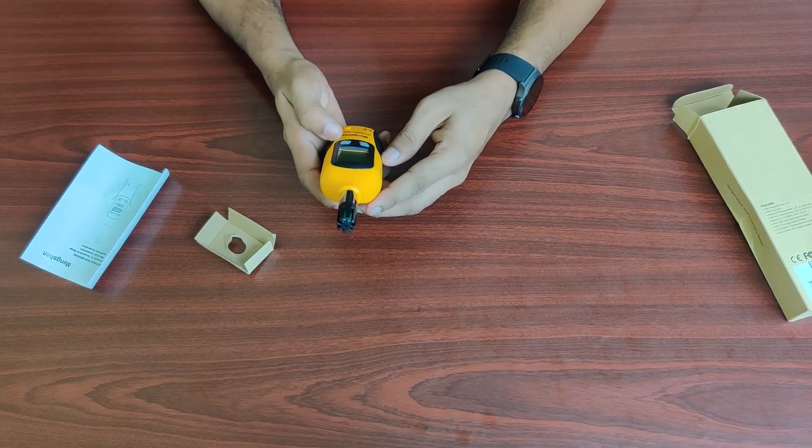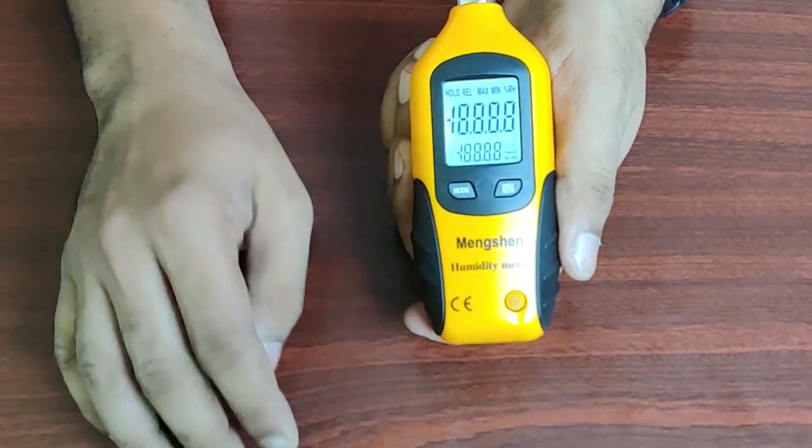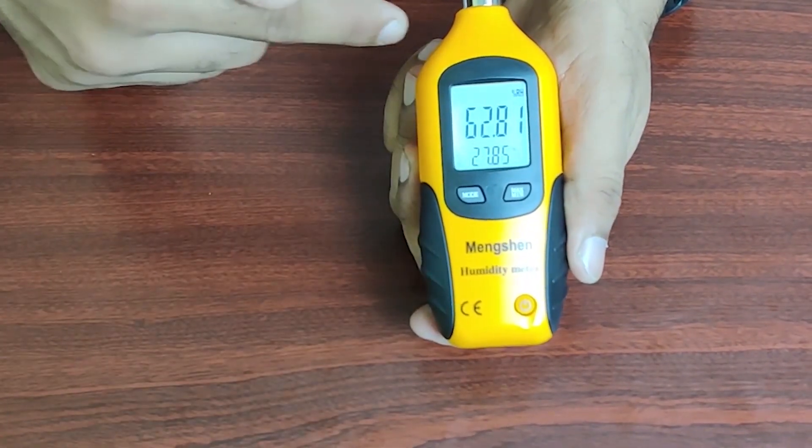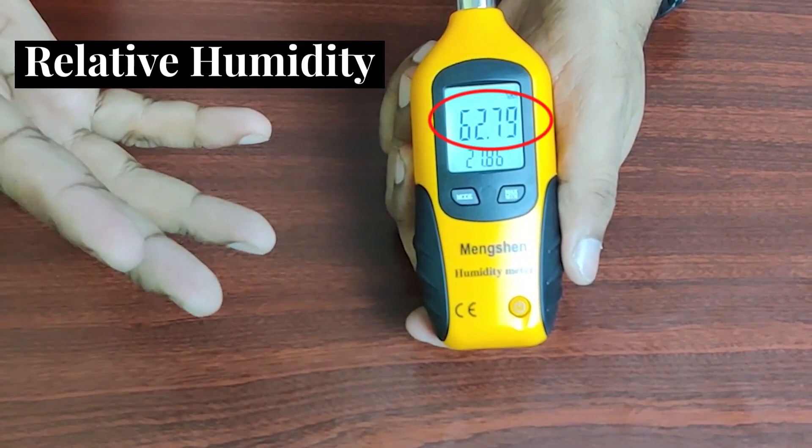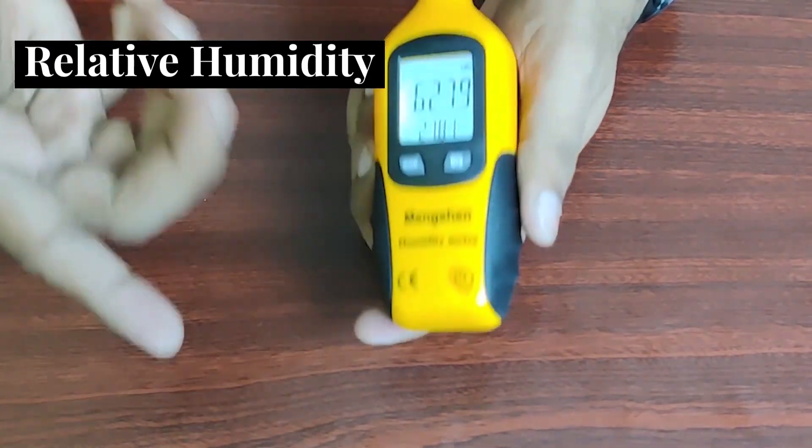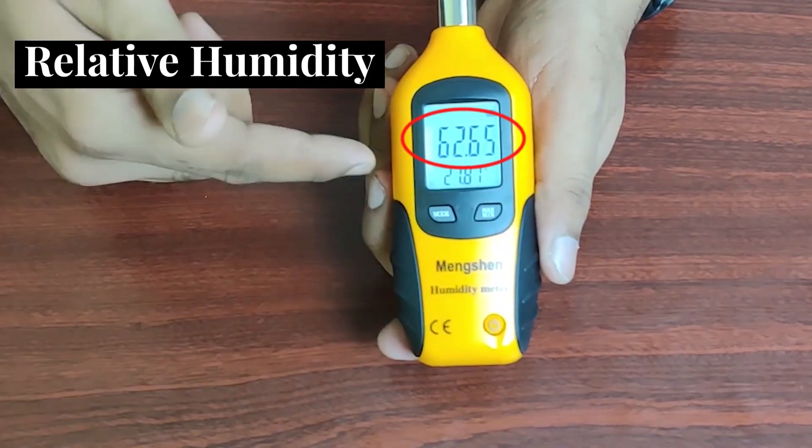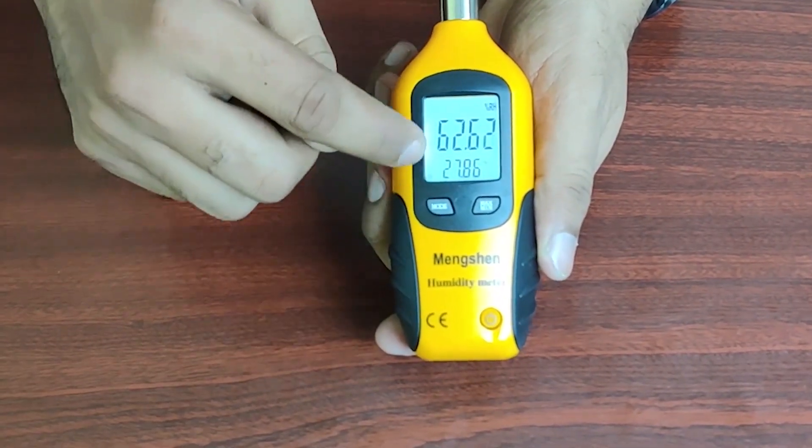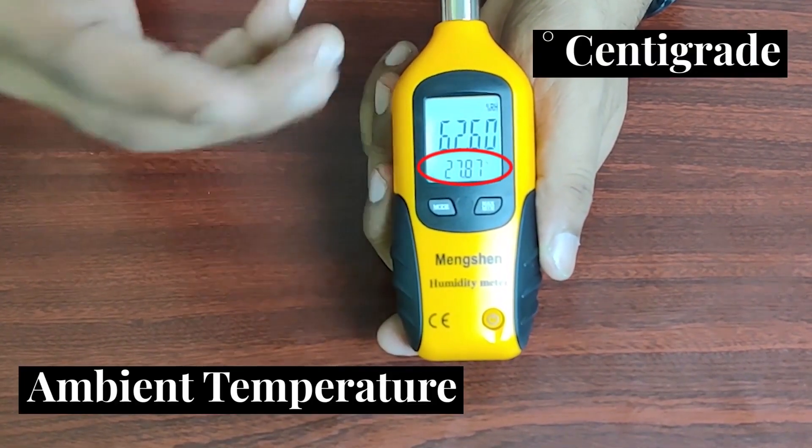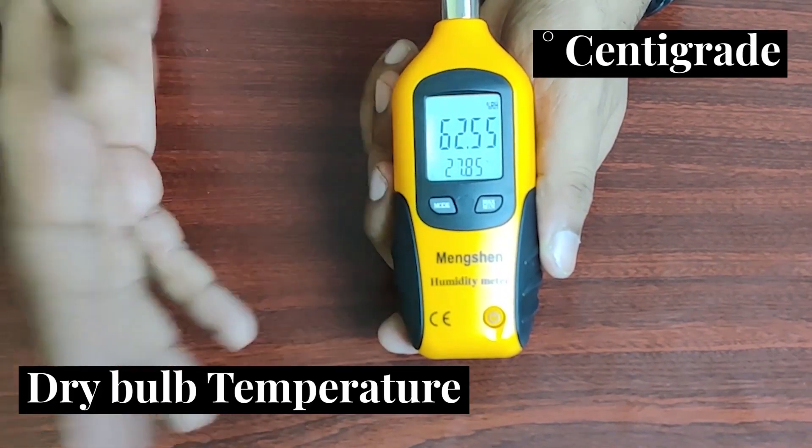Now I'm going to switch it on. As soon as you switch on, at the top you'll have the relative humidity, which is 60 to 62 to 63 percent right now, and also the ambient temperature which is also called dry bulb temperature, but they don't mention dry bulb—it is the ambient temperature.